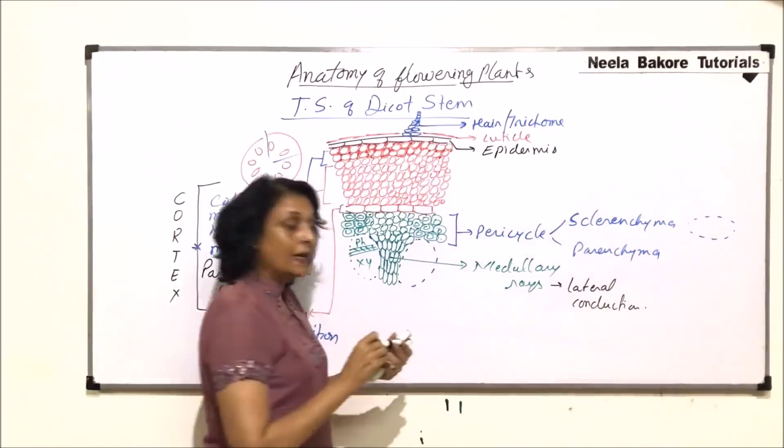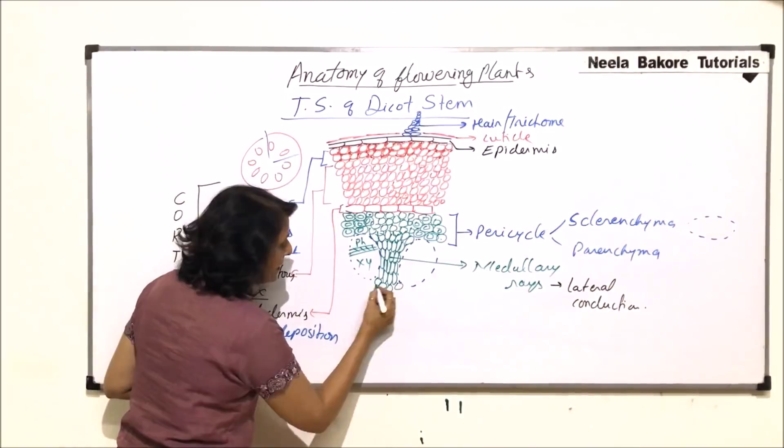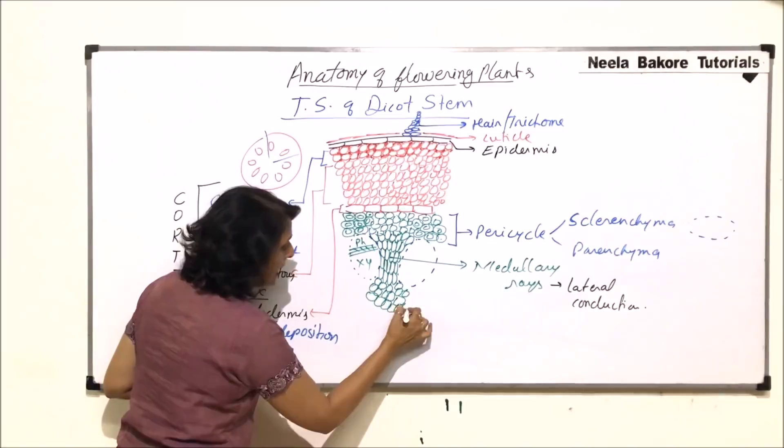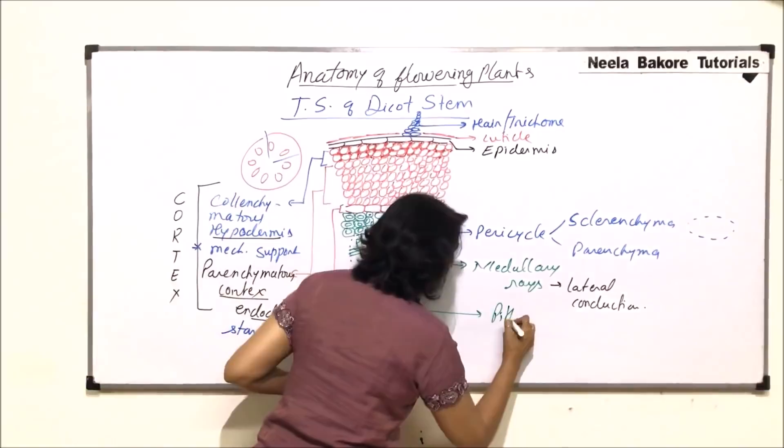Coming to the central part, as there is nothing between which the parenchyma would get squeezed, the inner cells are again loosely arranged. This mass at the centre is known as pith.